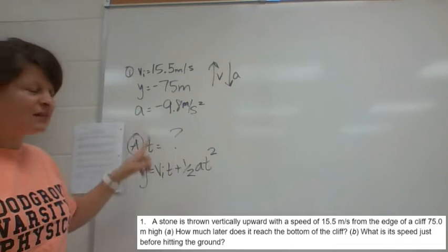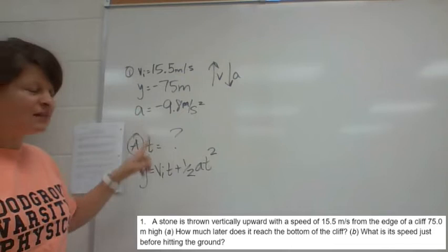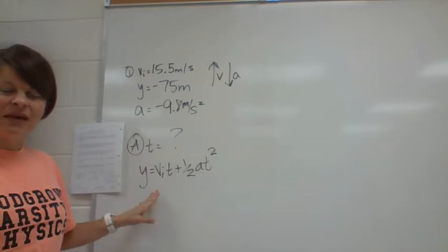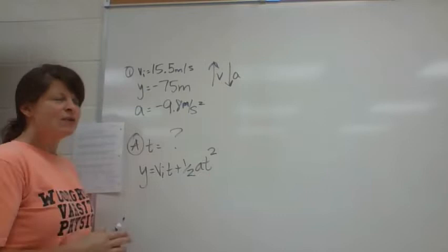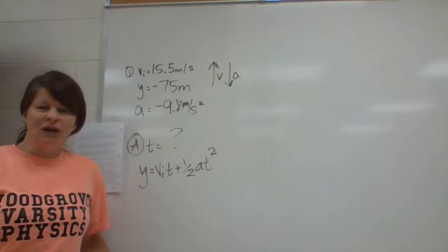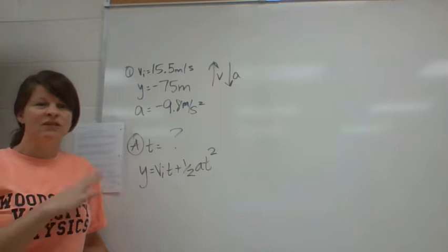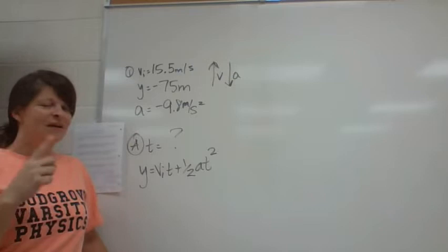So I have a V initial, yes. I need T. I have acceleration, I need T. The problem here is when you go to solve for T, notice that there's T to the first here, and there's a T squared here. When you have two different degrees on the variable you're trying to solve for, you need the quadratic equation to solve this. So I said we're avoiding that right now. So the only way you can avoid it is find the final velocity and then come back to find time.